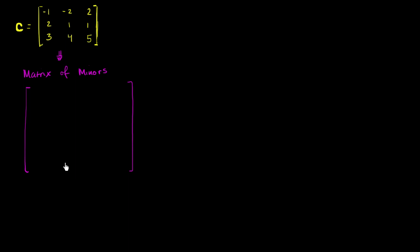The matrix of minors: for each element in the matrix, you cross out the corresponding row and column, and replace it with the determinant of the elements that are left. For the top-left element, when you get rid of that row and column, the minor is the determinant of 1, 1, 4, 5.